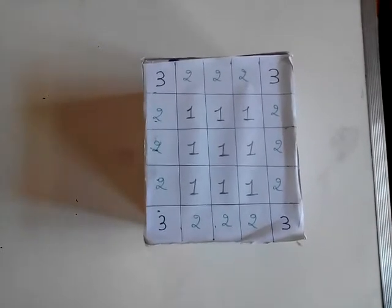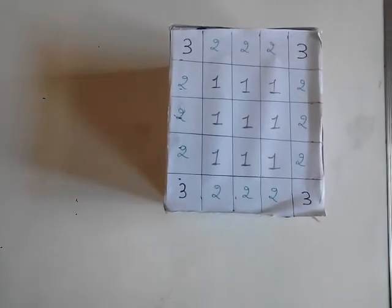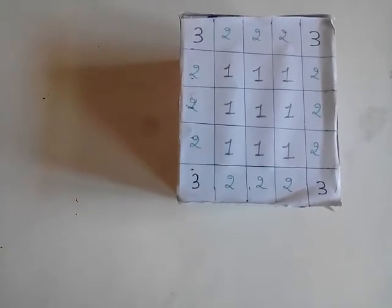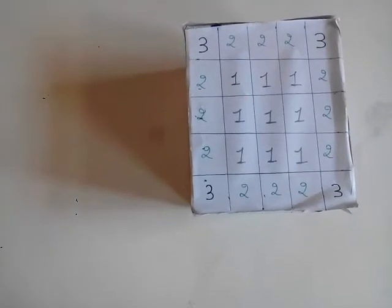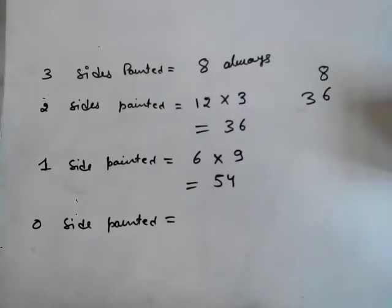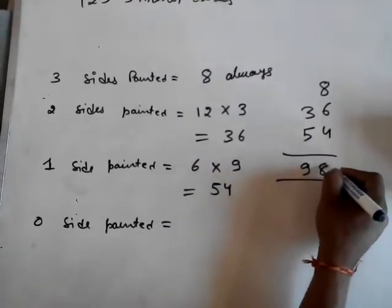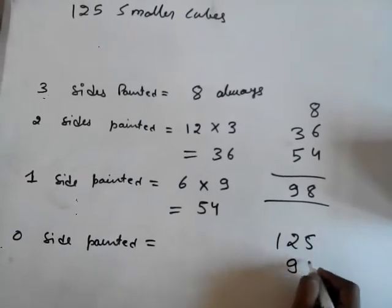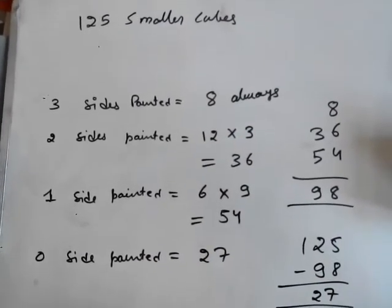My next question: how many cubes will have 0 faces painted? When I say 0 faces painted, those smaller cubes must not be lying on the faces of the bigger cube — they are the cubes lying inside. We already have: 8 cubes with 3 sides painted, 36 with 2 sides painted, and 54 with 1 side painted, totaling 98. Since the bigger cube is split into 125 smaller cubes, the remaining 27 cubes have none of their sides painted.